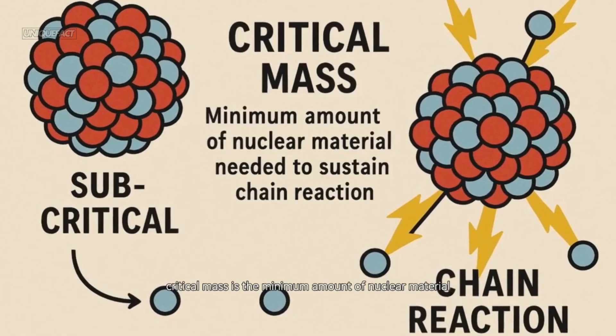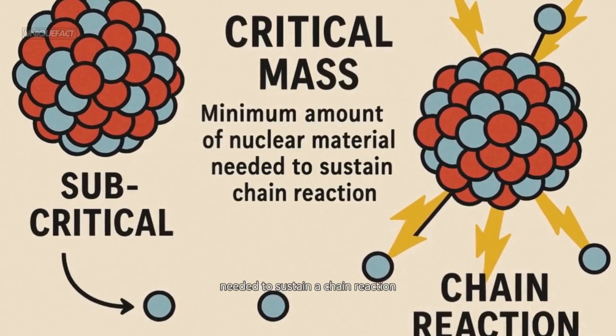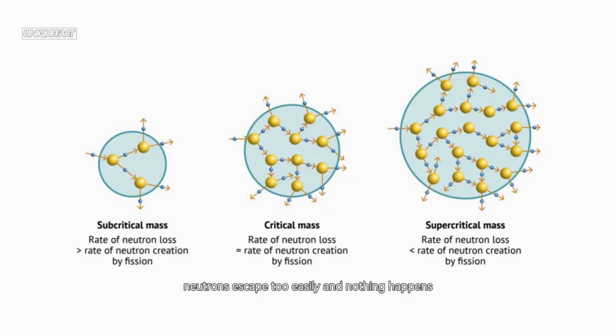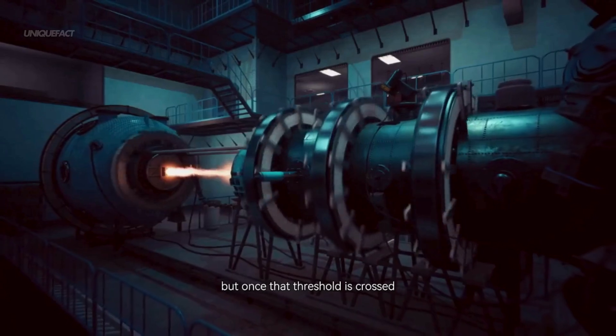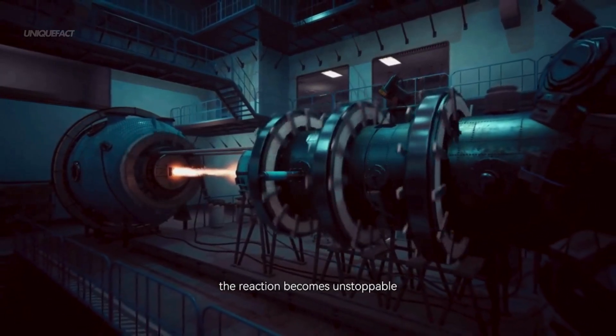Critical mass is the minimum amount of nuclear material needed to sustain a chain reaction. Below that, neutrons escape too easily and nothing happens. But once that threshold is crossed, the reaction becomes unstoppable.